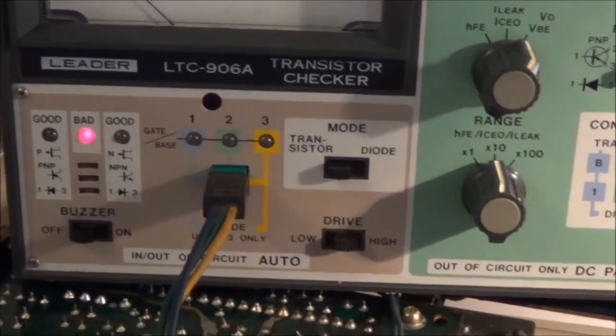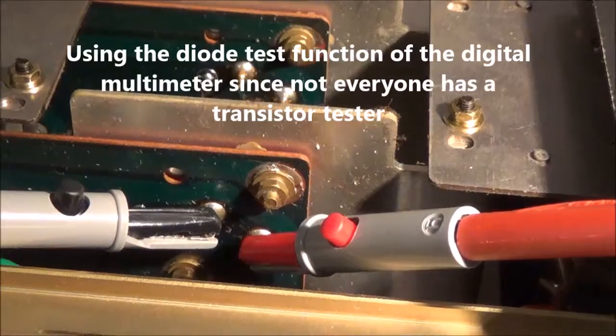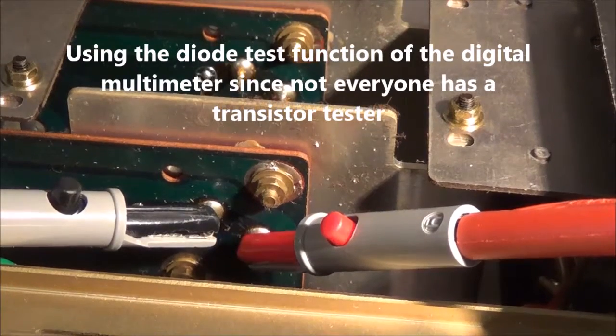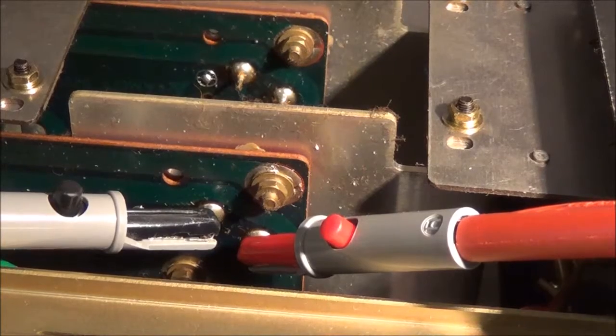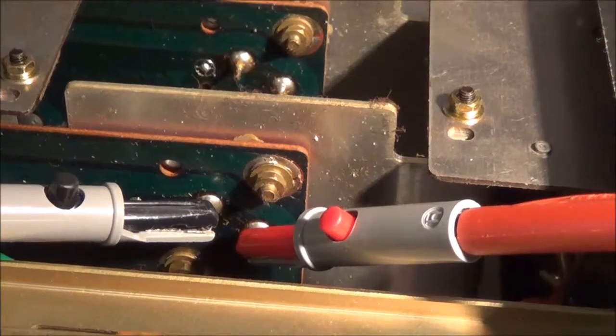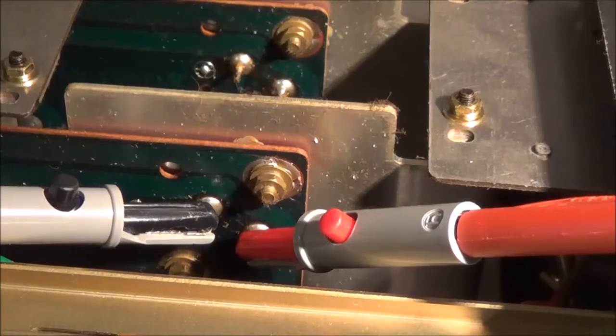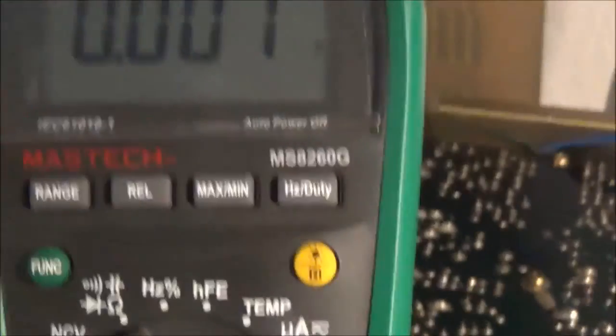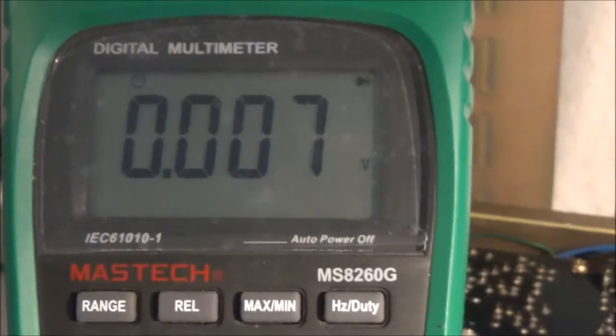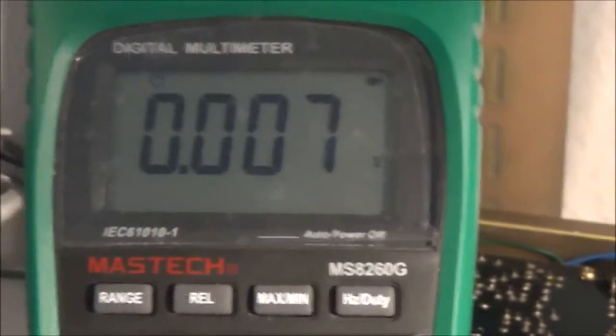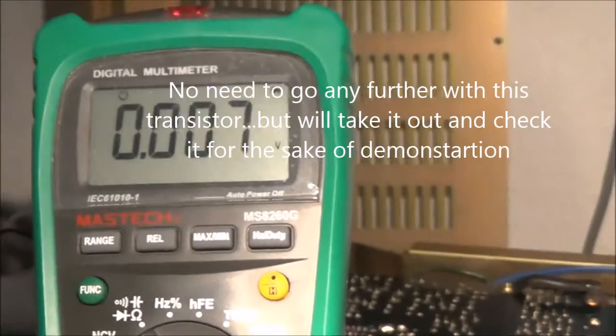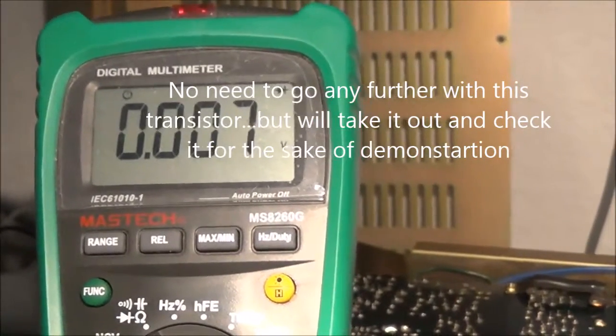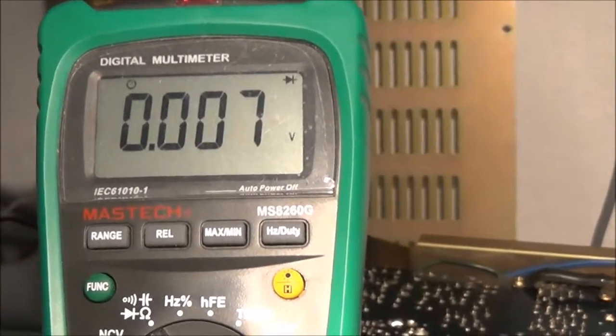I'm still doing in-circuit testing, this time with my ohmmeter. I've got the leads hooked up between the emitter and base of that transistor which showed bad with my Leader transistor checker. Here's what I got. It's showing me basically a short. So I reverse the leads and I'm still getting a short, very low ohms.